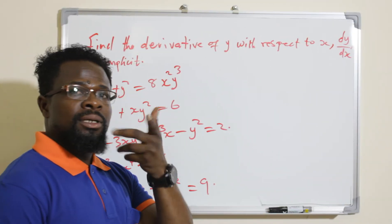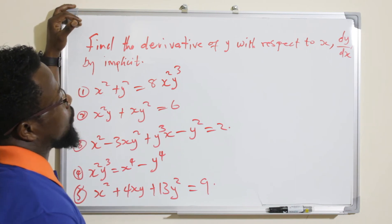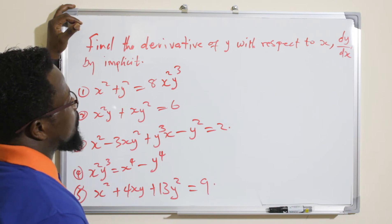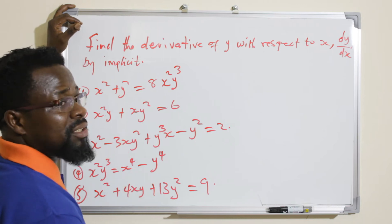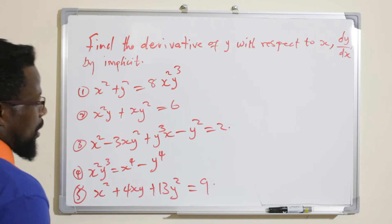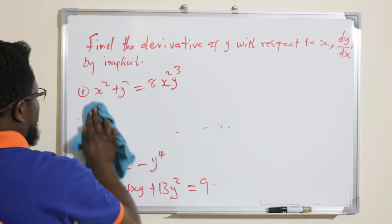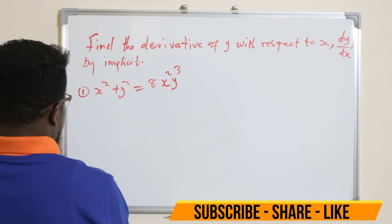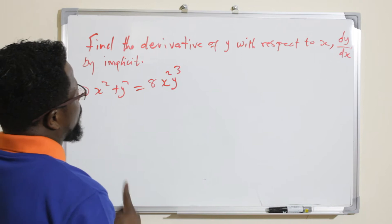Alright, let's solve these problems: find dy/dx by implicit differentiation for each of the given equations. Let's begin with question number one.